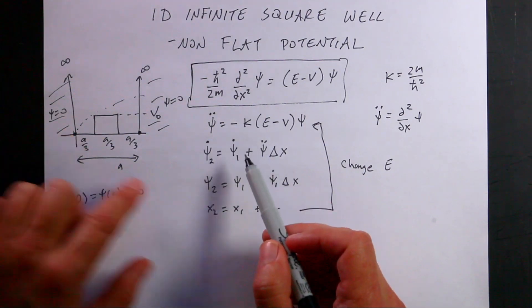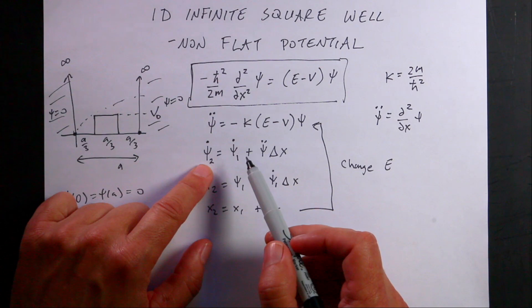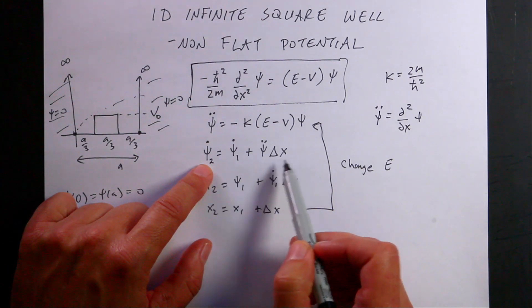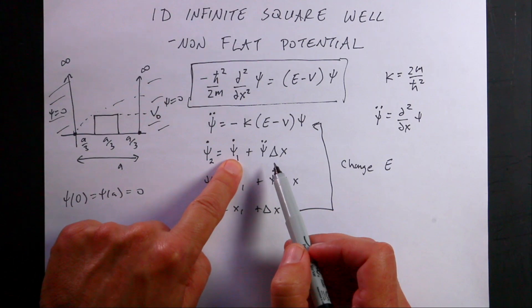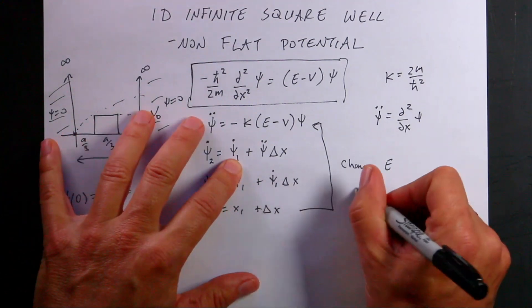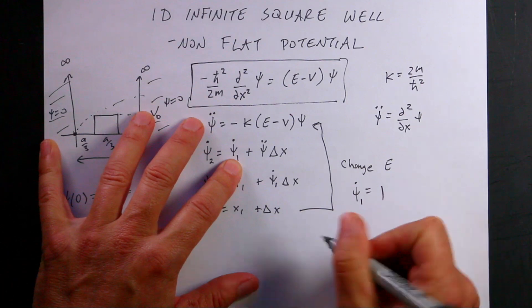And then I know the value of k. I can use that to then calculate the derivative psi dot at the end of that little space differential delta x. I'm going to break this into small pieces. Now I need to know the initial. So I'm just going to pick that. Let's say psi 1 dot equals 1. I'm just going to pick that.